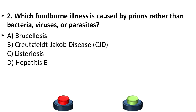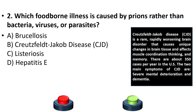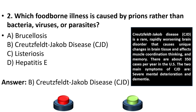Second question: Which foodborne illness is caused by prions rather than bacteria, viruses, or parasites? Options: brucellosis, Creutzfeldt-Jakob disease (CJD), listeriosis, hepatitis E. The answer is option B, Creutzfeldt-Jakob disease (CJD).